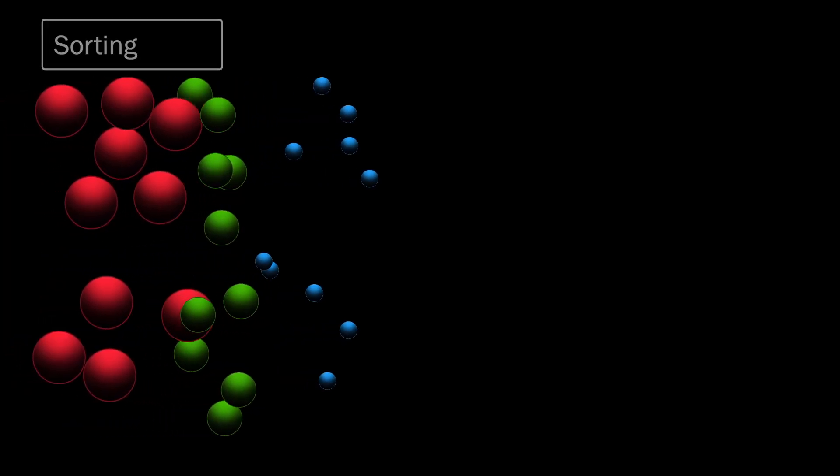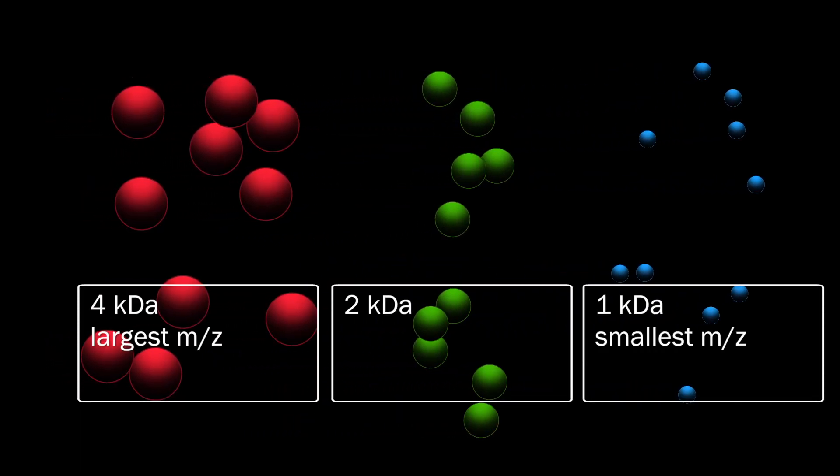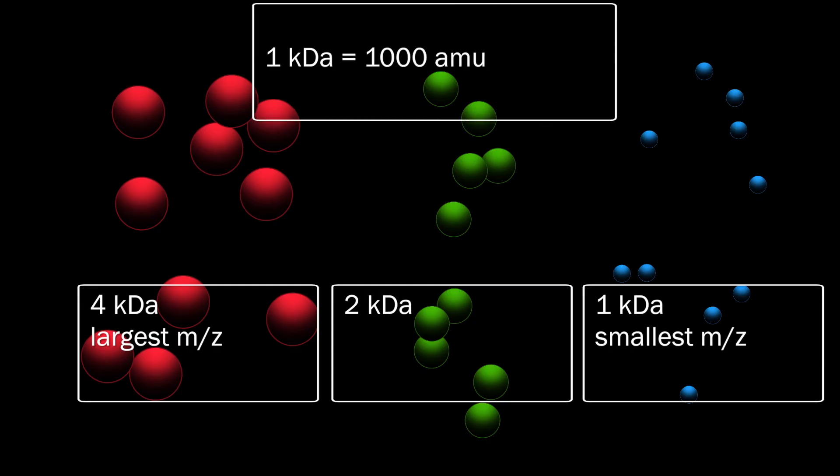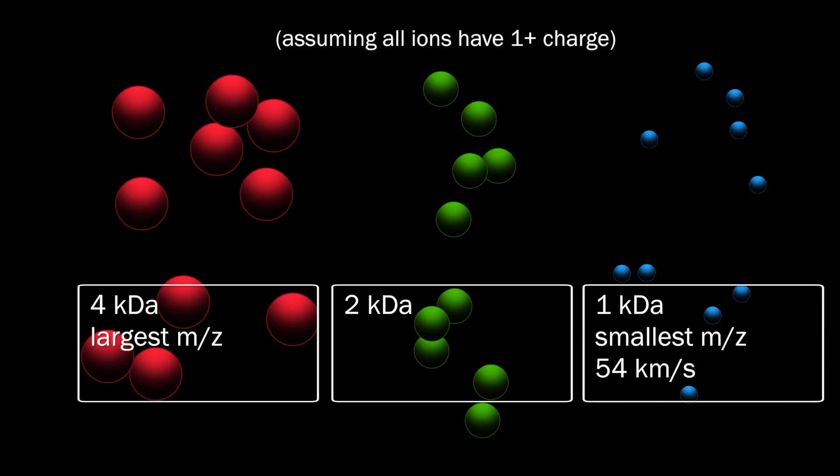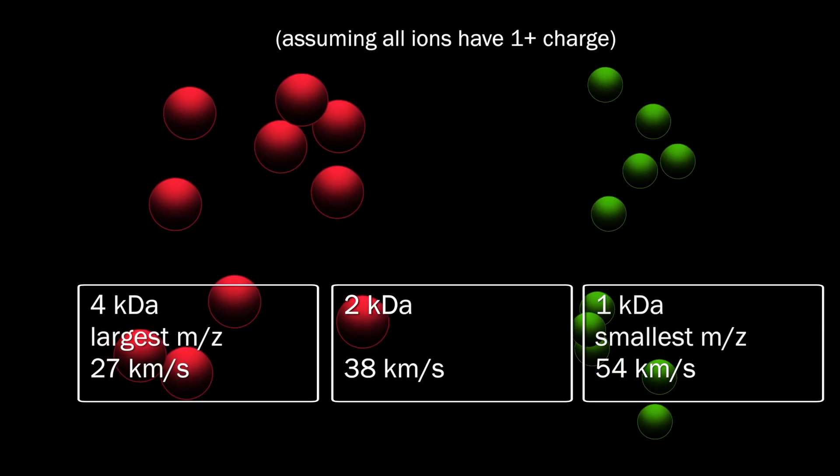In this example, we have a mixture of three macromolecules with masses of 1, 2, and 4 kilodaltons, where 1 kilodalton equals 1,000 atomic mass units. Using standard TOF conditions, this would cause the smaller 1 kilodalton ion to be accelerated to the fastest velocity, around 54 km per second. The 2 kilodalton ion would be accelerated to around 38 km per second, and the largest 4 kilodalton ion would be accelerated to the slowest velocity, around 27 km per second.